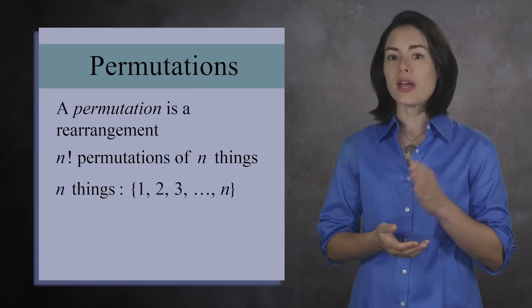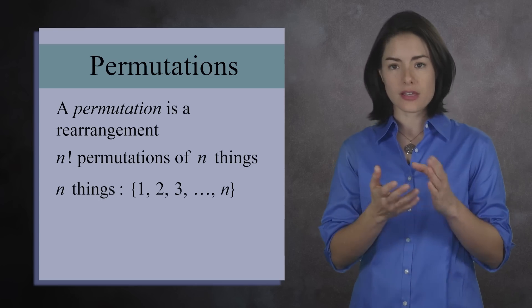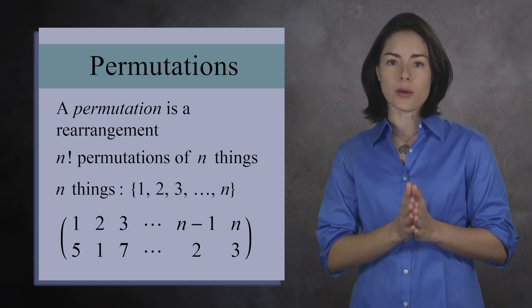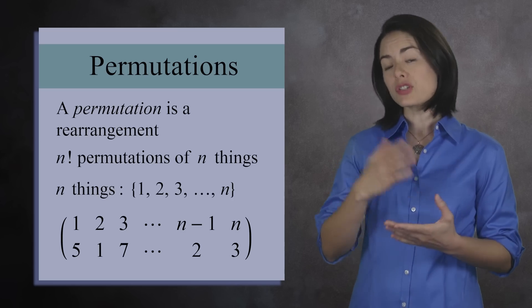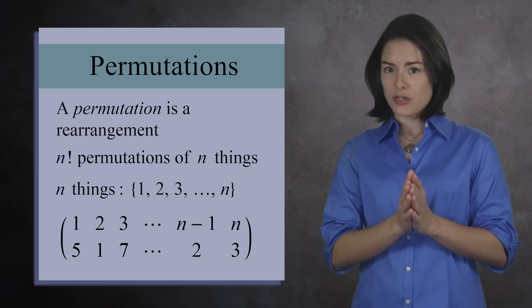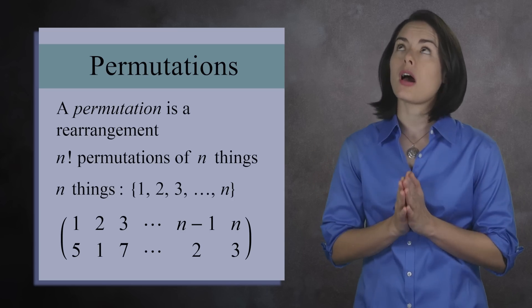There are n factorial ways to permute n distinct things. If you number the objects from 1 through n, then you can write a permutation like this. The top row are the numbers ordered 1 through n, and the bottom row are the numbers after the shuffling. This notation, while clear, takes up a lot of space.